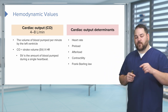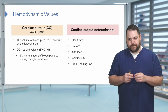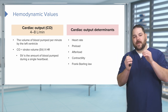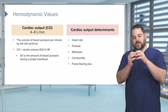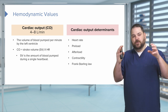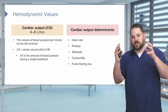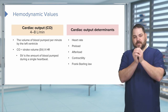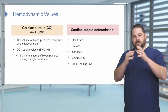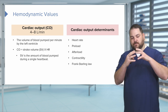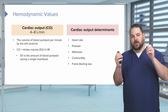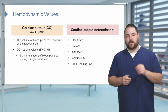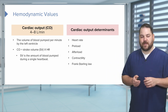I want you to remember Frank-Starling Law. Frank-Starling Law is like a rubber band. That myocardial tissue — if you stretch it, the further you stretch it, the more snapback you're going to get, the more contractility, the greater the squeeze. The more stretch, the greater the squeeze. Keep that in mind when we're talking about our left and right ventricle.